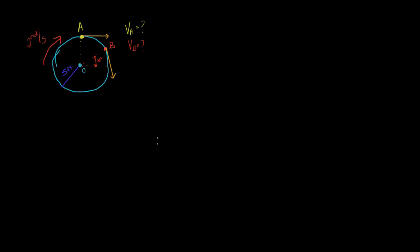In a vector sense, the velocity of A is equal to the angular velocity crossed with the position vector. The position vector goes from the fixed point of rotation to the point we're looking at. For velocity of A, we have 2 radians per second and we need to determine if it's negative or positive.